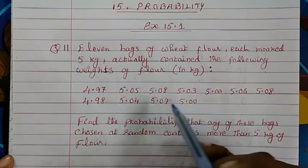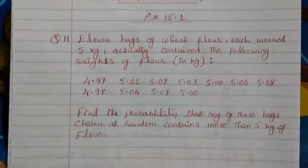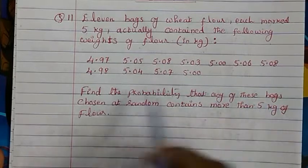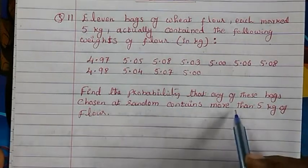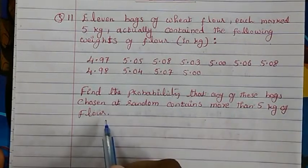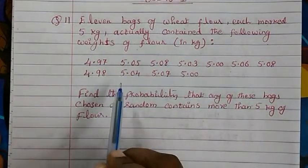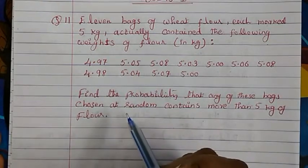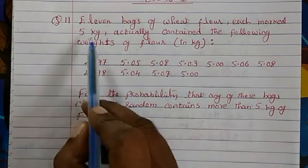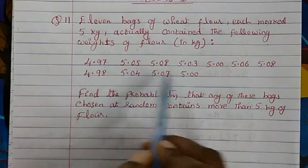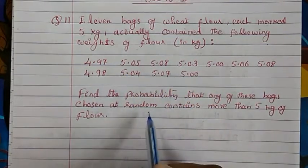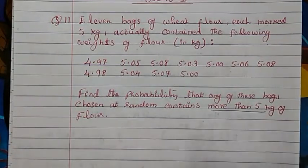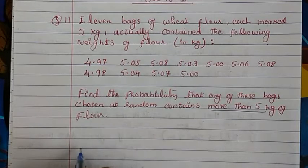Now what is the probability we have to find out? Find the probability that any of these bags chosen at random contains more than 5 kg of flour. Looking at this, which are the ones more than 5 kg? Though it is written 5 kg, we know some are less than 5 kg, some are more than 5 kg. So we have to find out the probability for more than 5 kg.